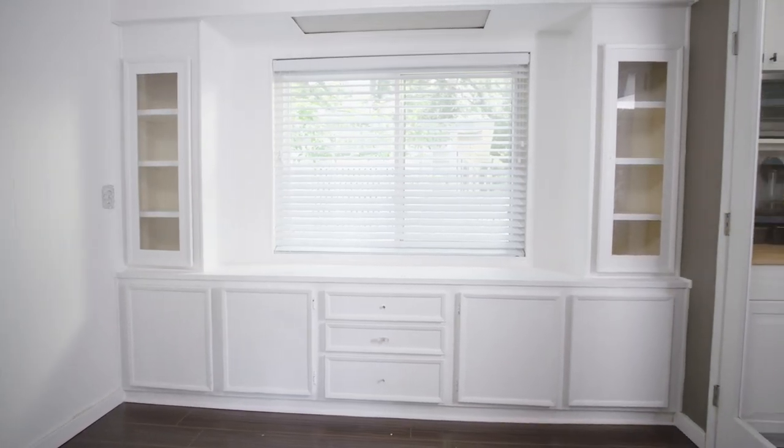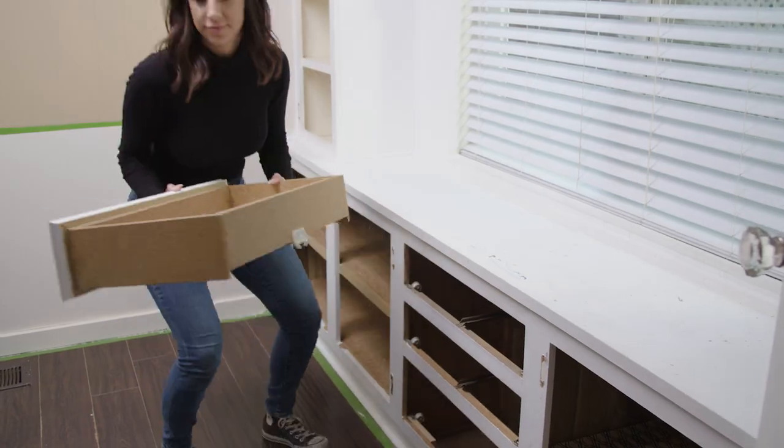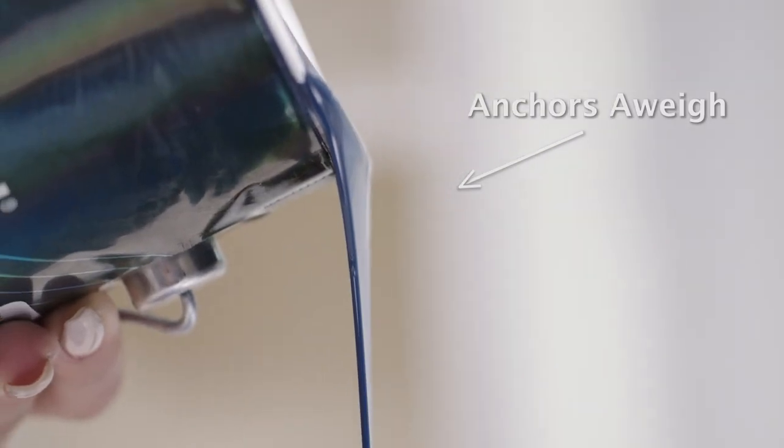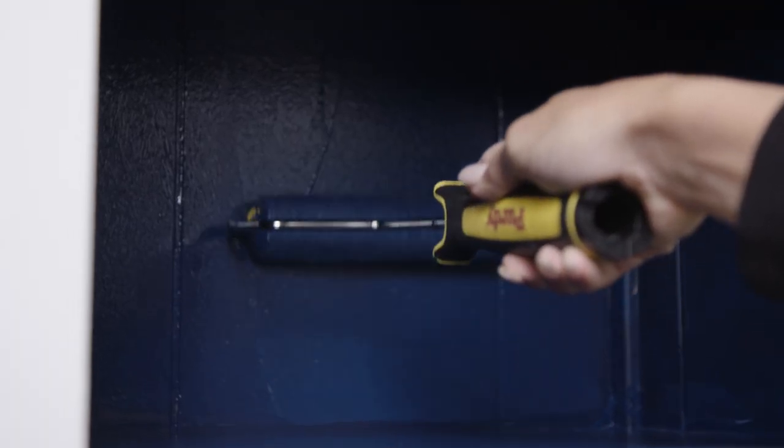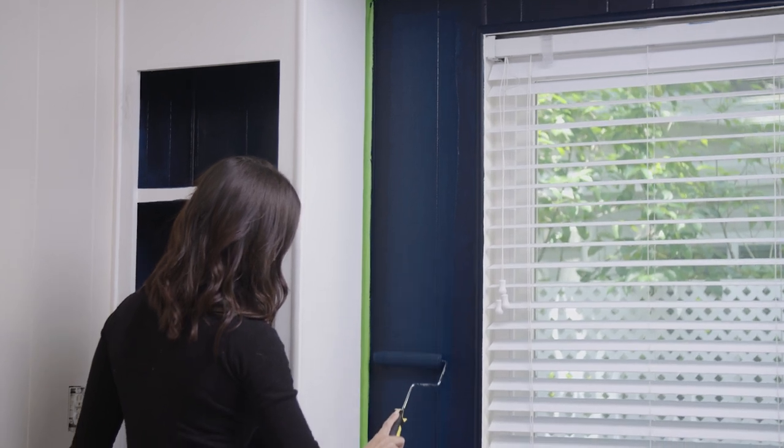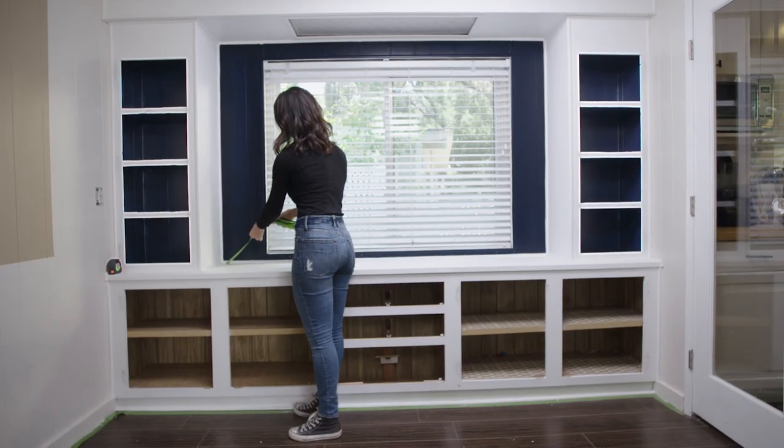I moved on to the built-in cabinets. The first color that I applied in the built-ins was the Anchors Away. I used it as an accent in the back of each shelf. The deep blue gave the shelves depth and made the light pop through the window.